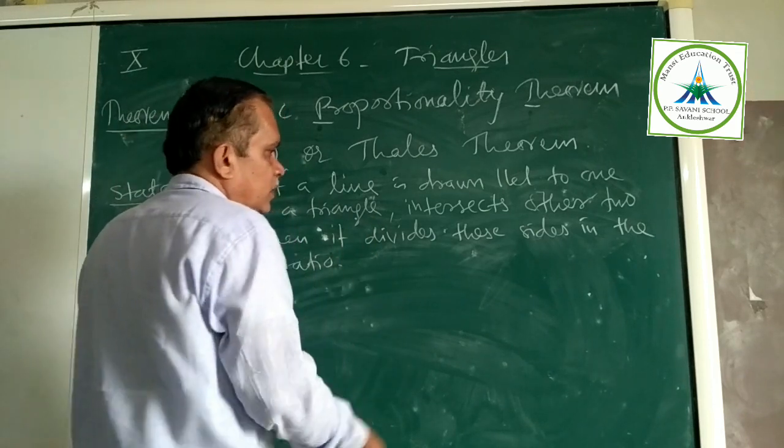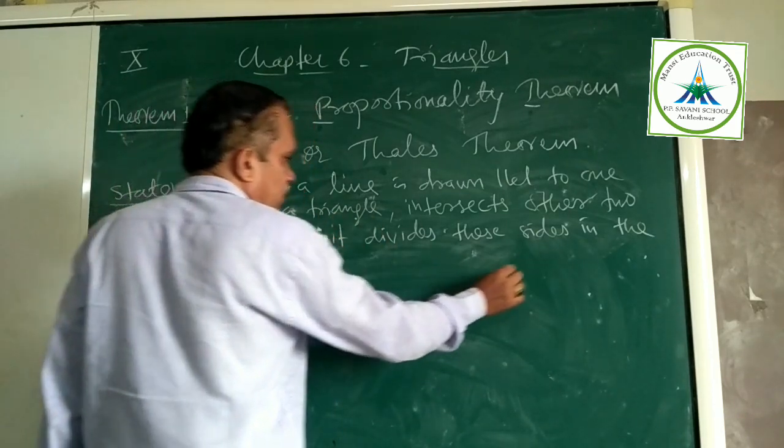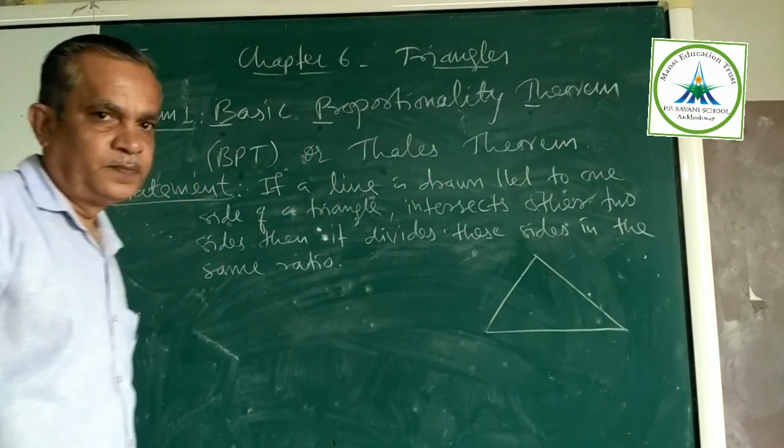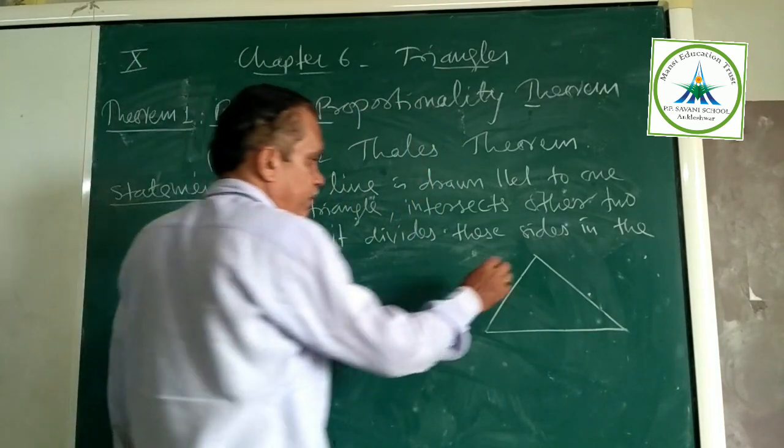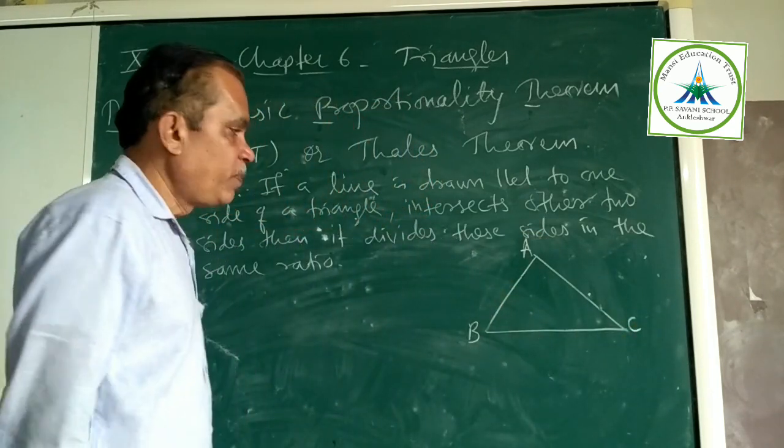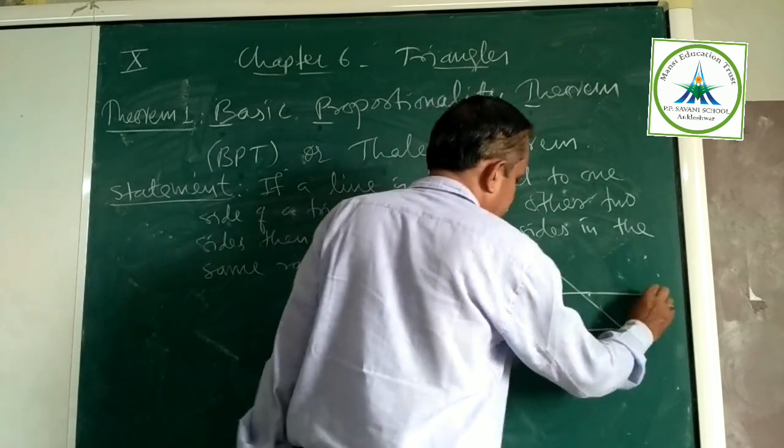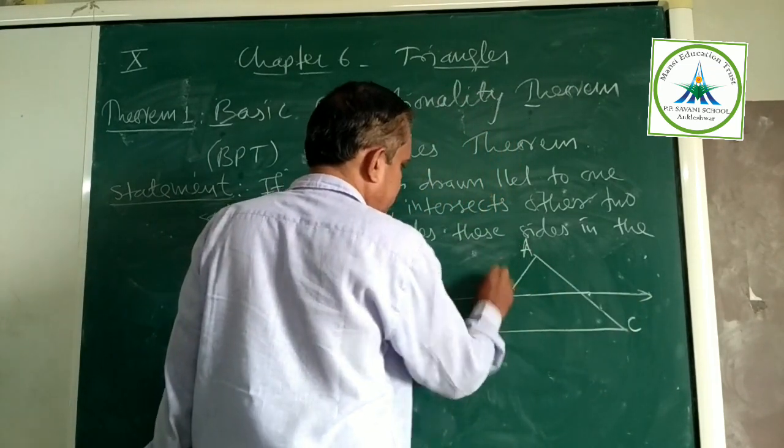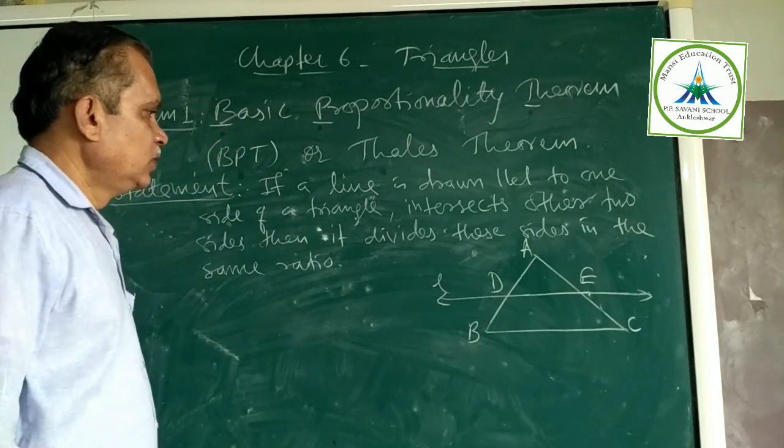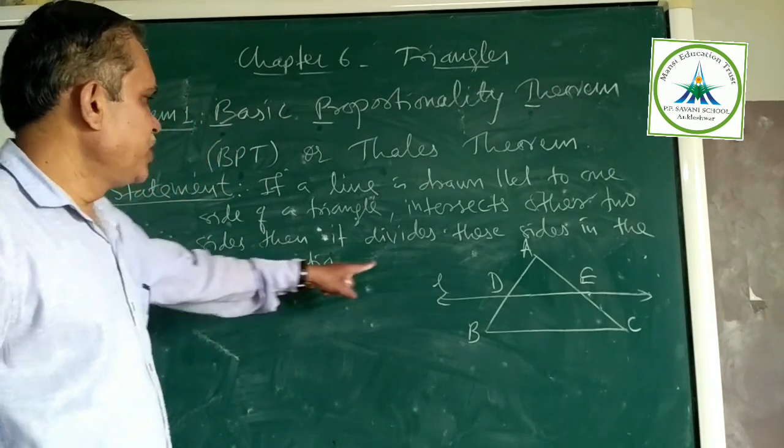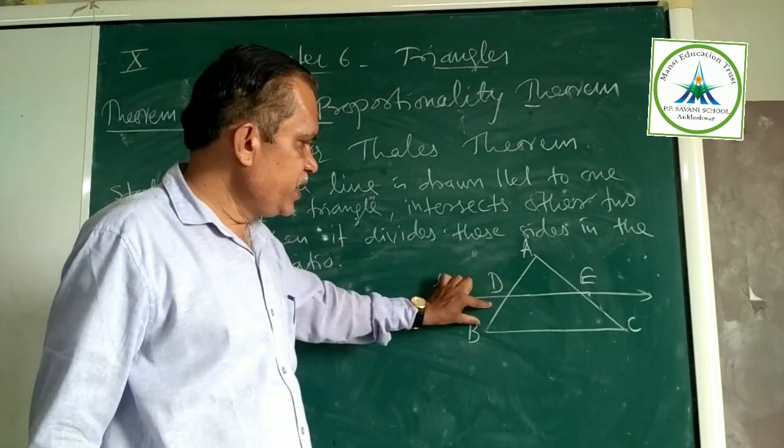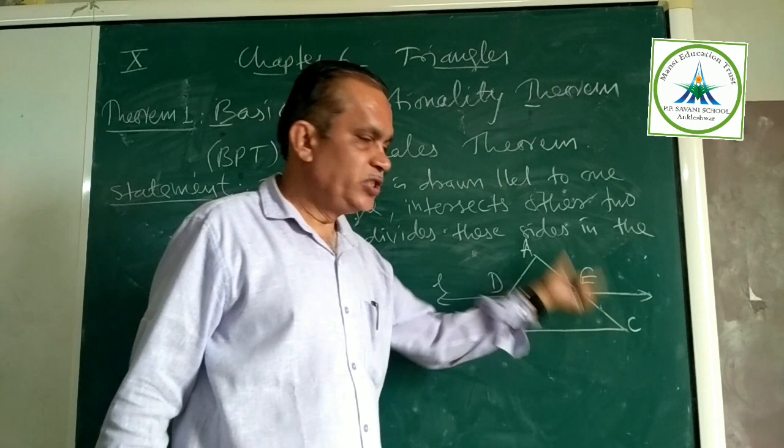What is your triangle? Let us take triangle ABC. Line drawn parallel to one side, line parallel to BC. Then that is DE. Then it divides these two sides in the same ratio. Means AD upon DB equal to AE upon EC.